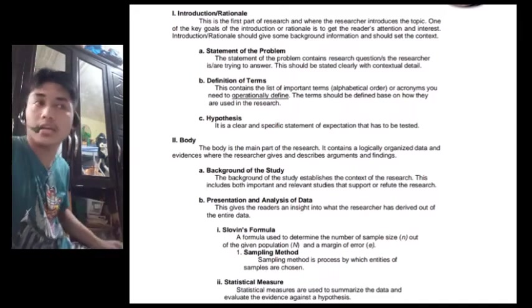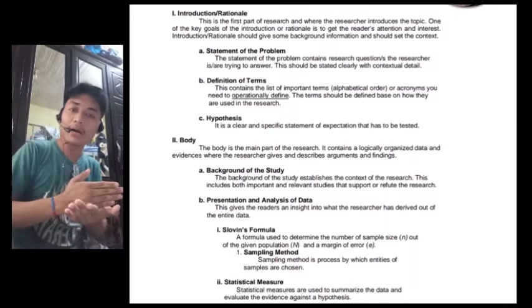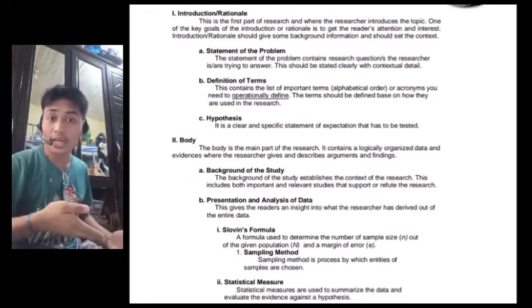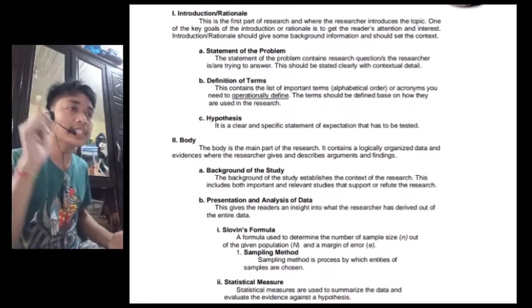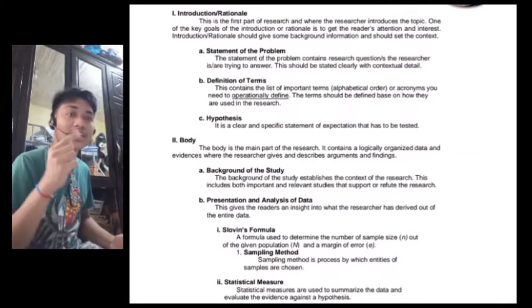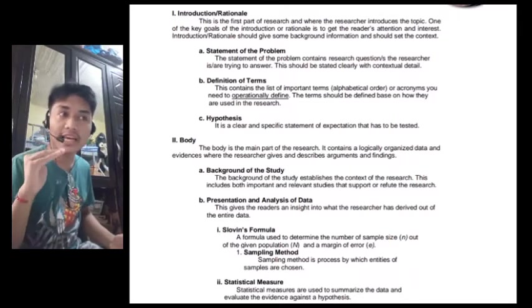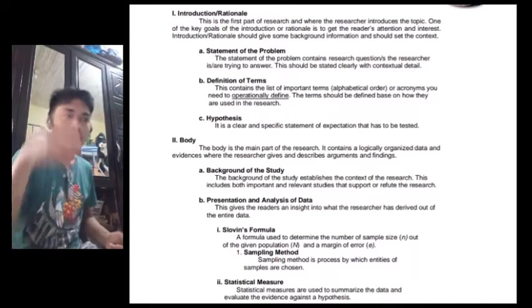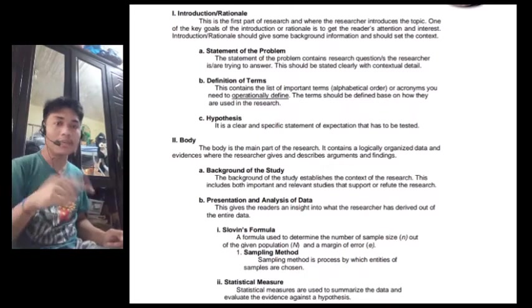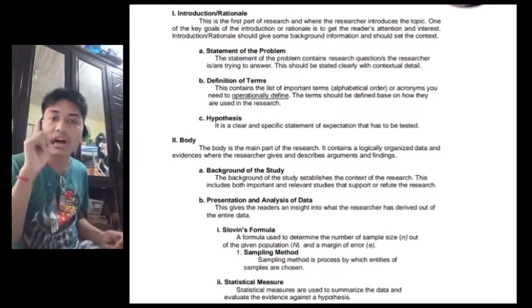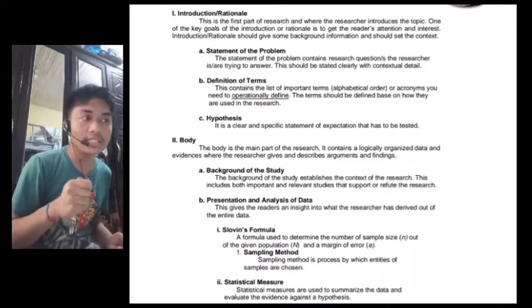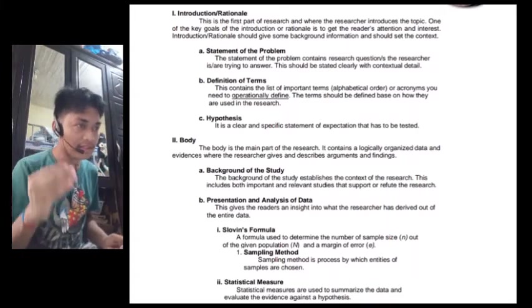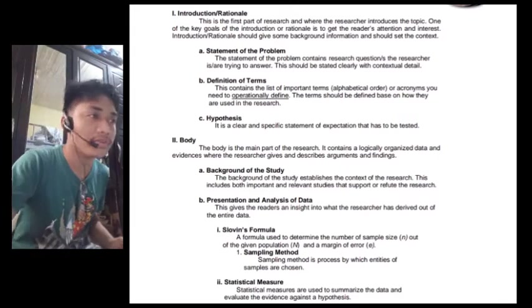The second one is body. So, automatic, when we have the body part, that means the whole paragraph and the whole story. The body is the main part of the research. It contains logically organized data and evidences where the researcher gives and describes arguments and findings. It is subdivided into two, so A and B. Background of the study. The background of the study establishes the context of the research. This includes both important and relevant studies that support or refute the research.